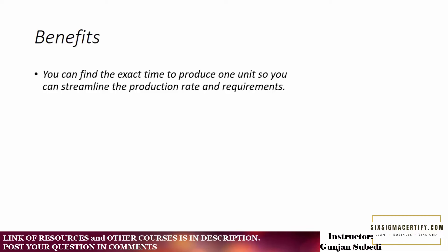Now let us see what are the benefits of the takt time. The first benefit is you can find the exact time to produce 1 unit so that you can streamline the production rate and requirements. If you know how much time producing 1 unit takes, you can forecast production rate and requirements. The second benefit is you can avoid overproduction and also underproduction. If you know exactly what should be the rate of your production, you will not produce at a lower speed or at a higher speed. You will start producing goods and services exactly at the rate of the demand of the customers.